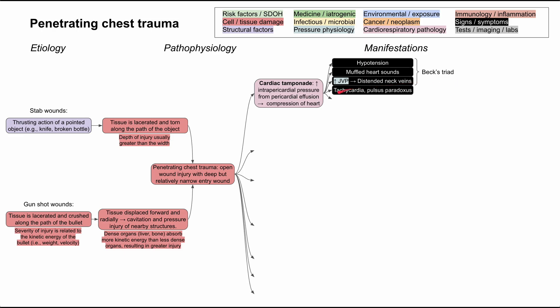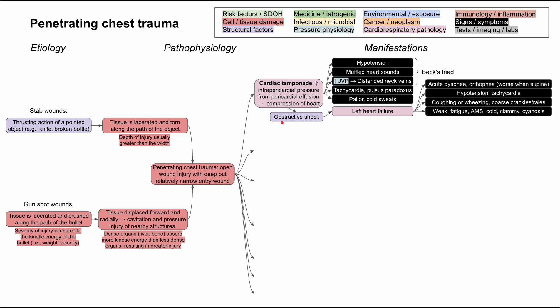Other symptoms include tachycardia and pulsus paradoxus, as well as pallor and cold sweats. In very severe cases, cardiac tamponade causes obstructive shock, which can lead to both left heart failure and right heart failure.